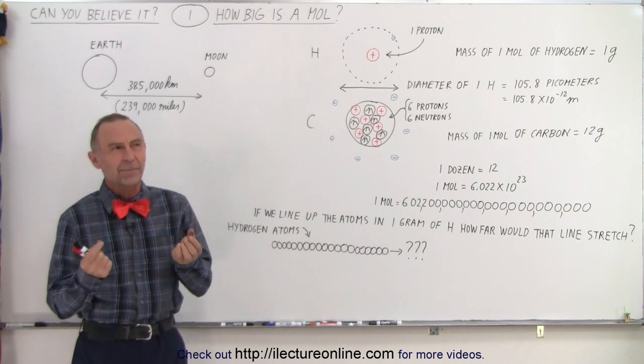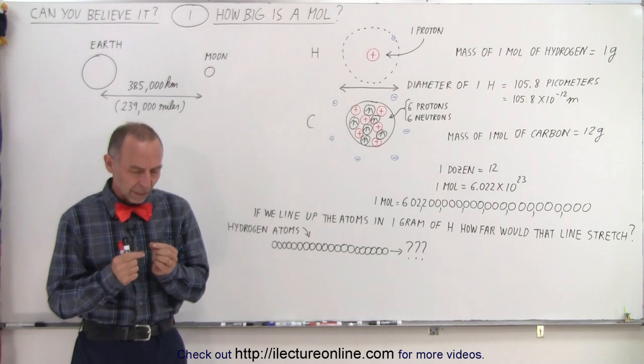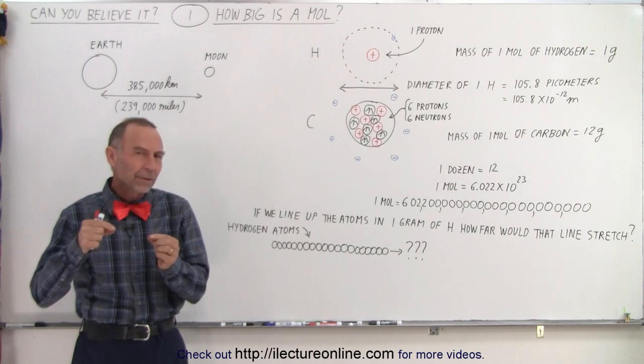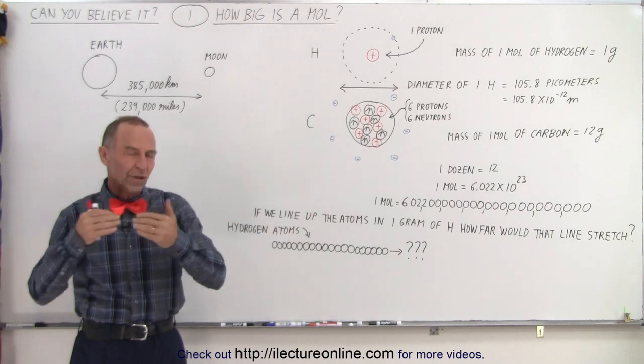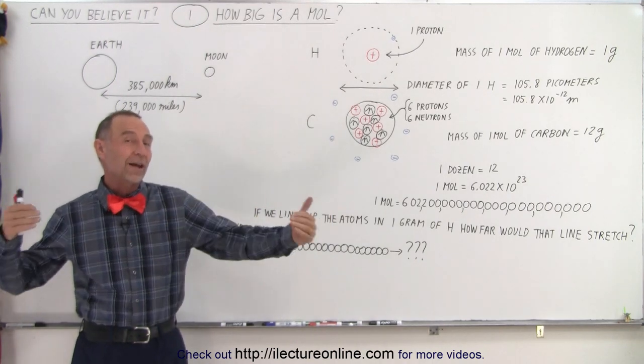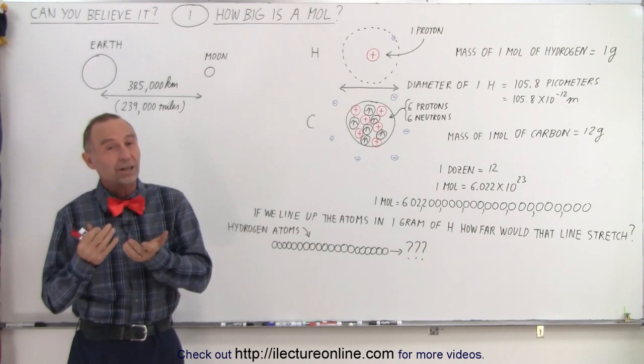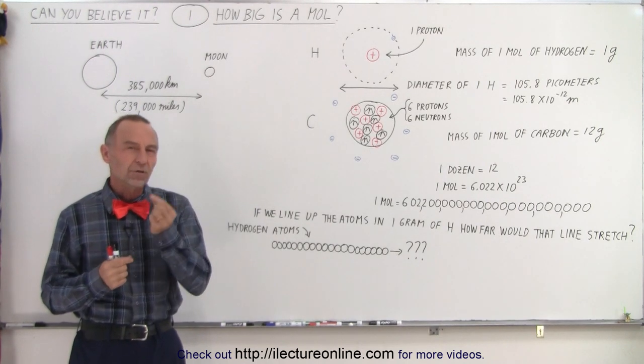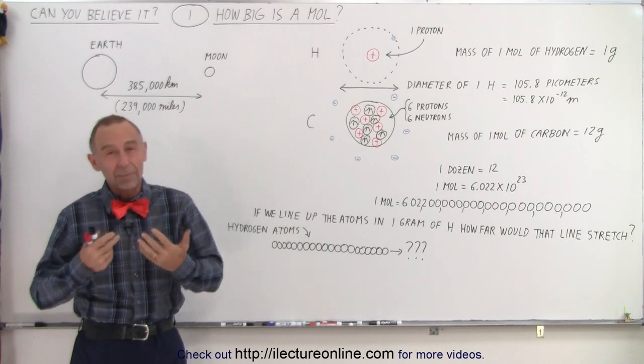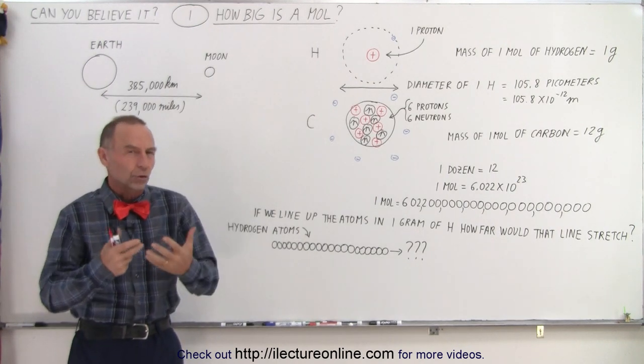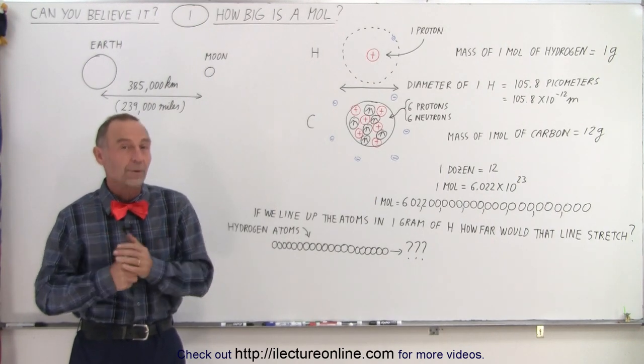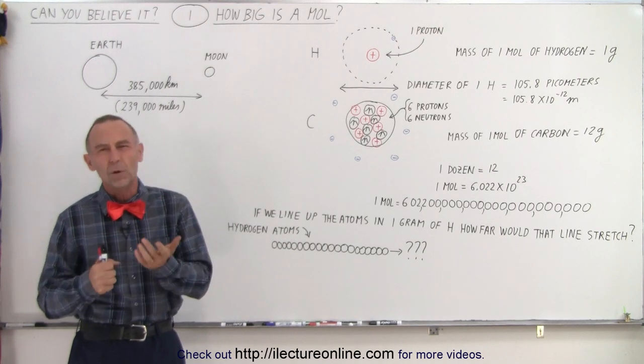This morning I started thinking about how big is an atom and what would happen if we line them up. How long would a stretch of atoms be if we had a certain number of them? The number I was thinking about was a mole, because a mole is a number that we use in chemistry and physics to denote a certain number of molecules or atoms. So what is a mole?